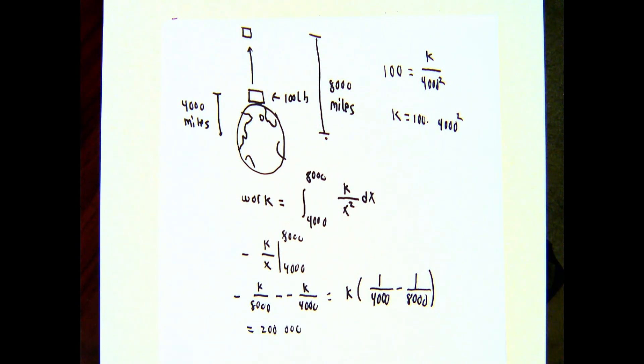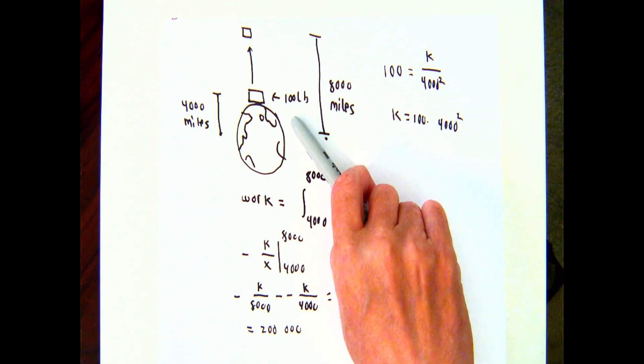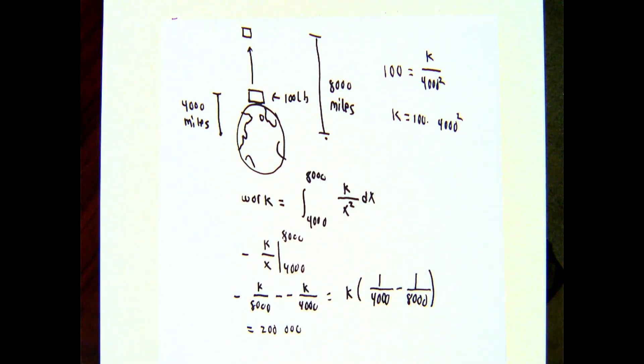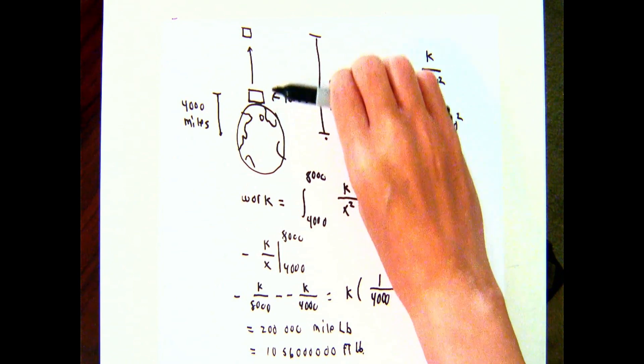But of course, you have to think about what the units are here. This is work or energy, and work or energy is in force times distance. I'm measuring my forces in pounds, but I'm measuring my distances in miles. So this isn't in foot-pounds, it's in mile-pounds. If I want to convert this into foot-pounds, all I have to remember is that each mile is 5,280 feet. So I'm going to replace the word mile with 5,280 feet. And then I'll have to multiply 200,000 by 5,280 to get the number of foot-pounds. This turns out to be a rather large number of foot-pounds. It's very expensive to move things from the surface of the Earth into space.